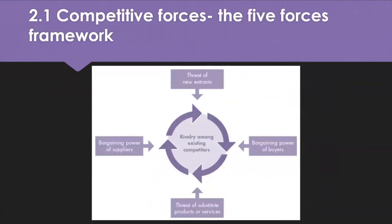In Learning Outcome 1 we also looked at Porter's Five Forces, which looks more at the immediate trading sphere of an organisation — the competitive forces at work much closer to where the organisation operates. Michael Porter argued that developing strategy is to cope with competition, and that viewing competition as only firms offering the same products or services is not necessarily the right way to do it. You can use this framework to assess the attractiveness of an industry and also look at whether there's a potential for profit.